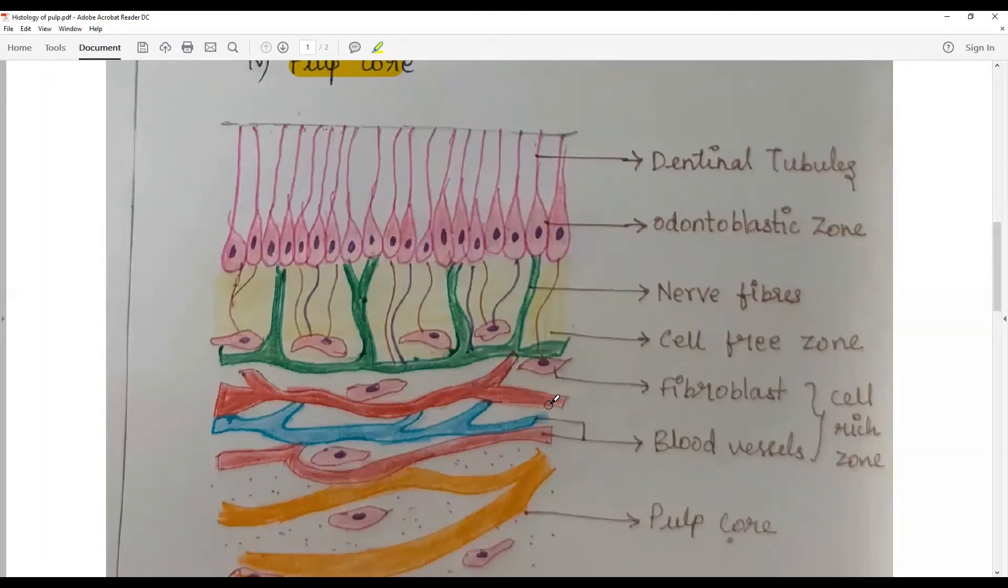I would advise to draw both the diagrams. So you have the dentinal tubules, you have the odontoblastic zones made up of odontoblasts nucleus, odontoblastic process.